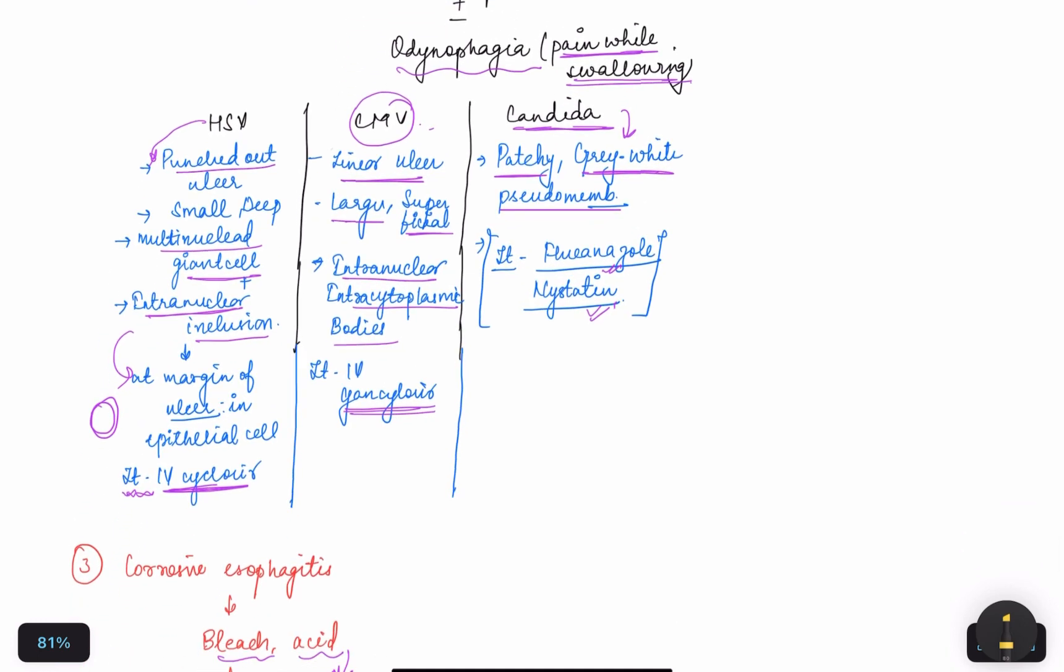Infections can be distinguished based on different infections like herpes simplex virus, cytomegalovirus, and candida. Herpes simplex virus is a punched-out ulcer with small, multi-nucleated giant cells plus intranuclear inclusion, and it is present at the margin of the ulcer in the epithelial cell. The treatment is IV acyclovir. Next is cytomegalovirus, which is a linear ulcer.